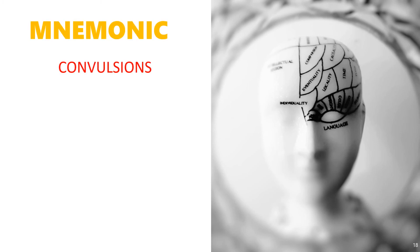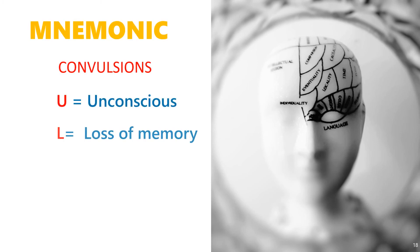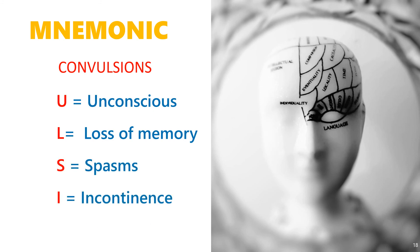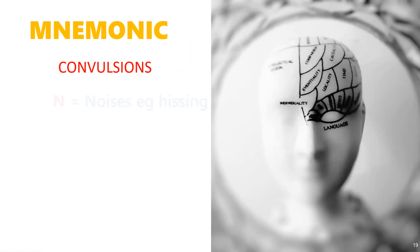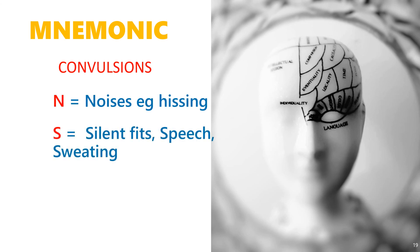Following on: U equals unconscious, L equals loss of memory, S equals spasm, I equals incontinence, O equals changes in odour and taste, and N equals noises — for example, hissing — due to an aura.